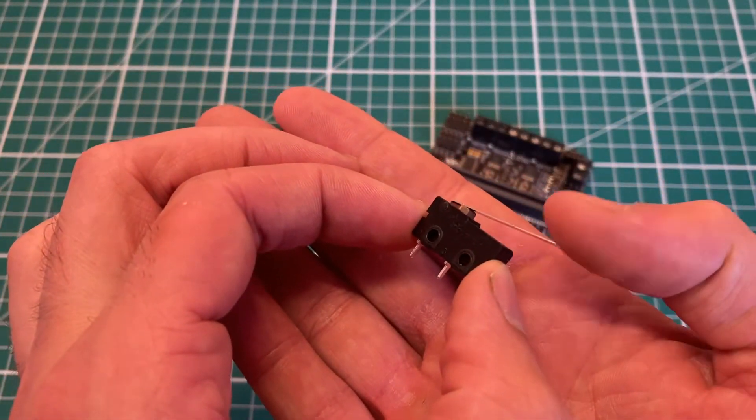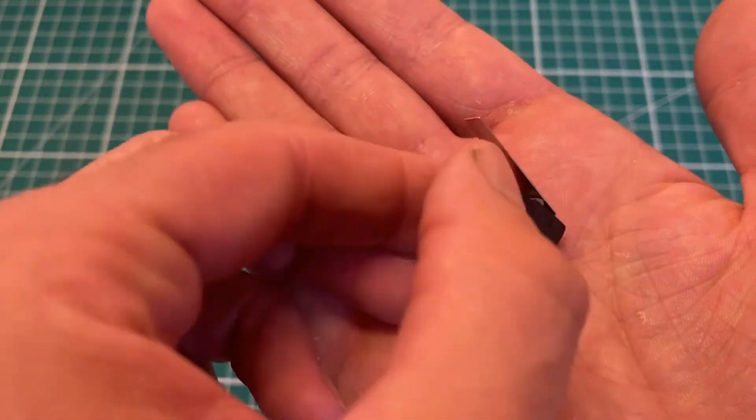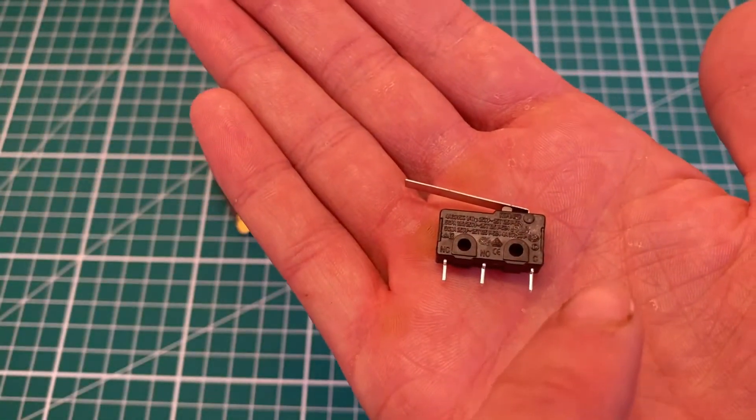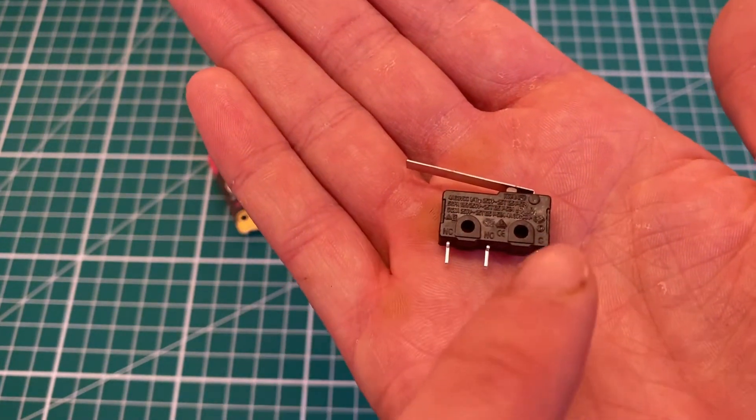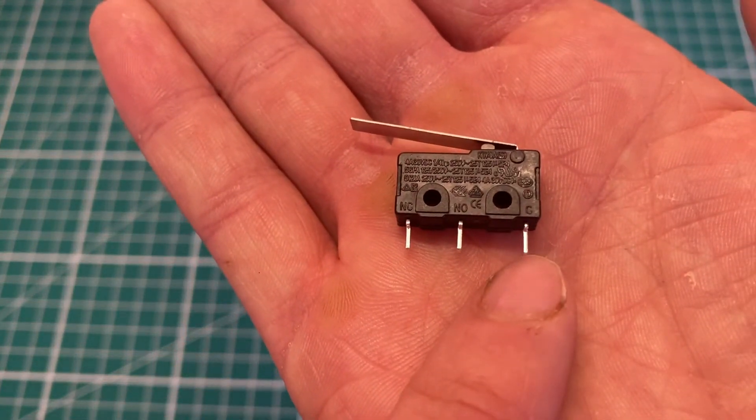It is a switch, as you can tell by the name, and it usually has three separate pins. On the limit switch, although it comes in all different shapes and sizes, it usually has identified on it what's the common pin—so you can see C here for common, NO for normally open, and NC for normally closed.